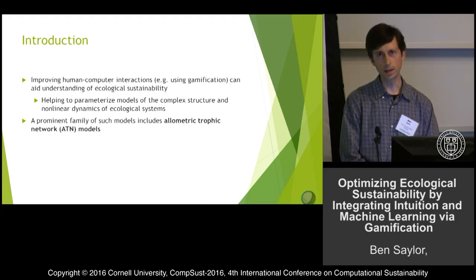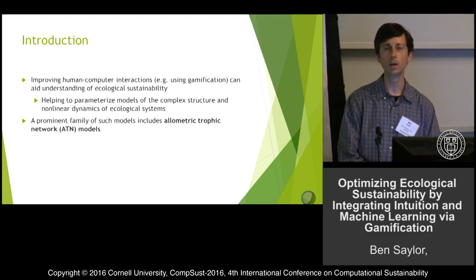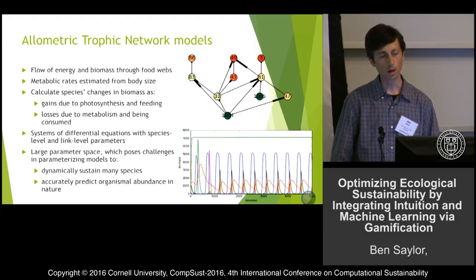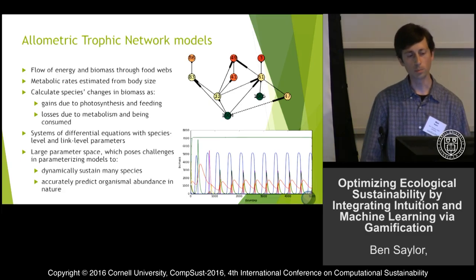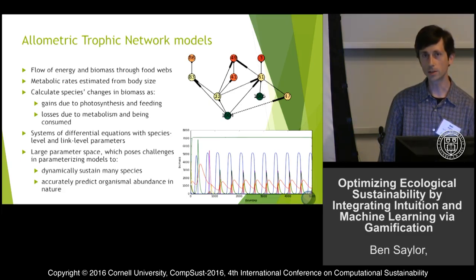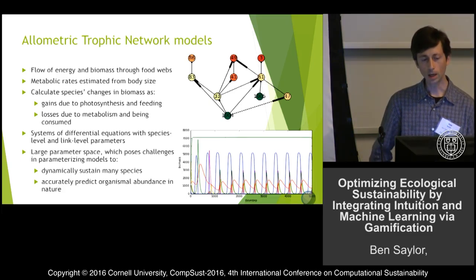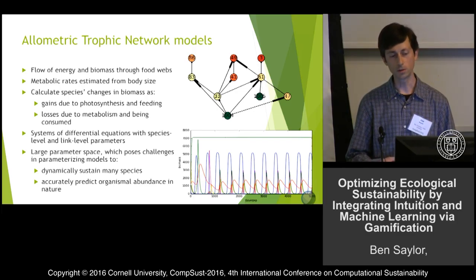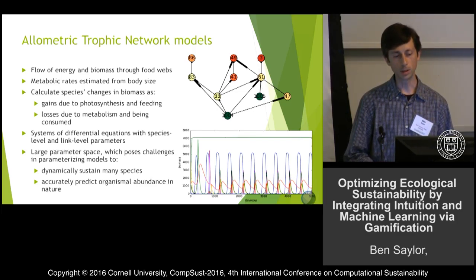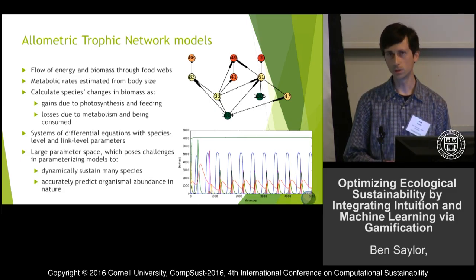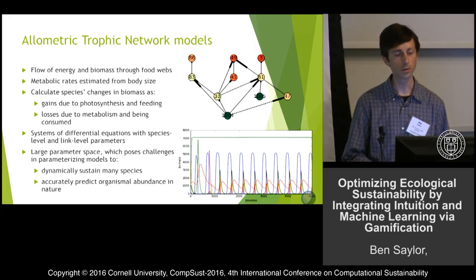An example of one of these kinds of models is the Allometric Trophic Network, or ATN model. ATN models describe the flow of biomass or energy through food webs, and a key aspect is they use metabolic rates estimated by body size. These models calculate changes in species biomass as gains due to photosynthesis and feeding, and losses due to metabolism and being consumed.